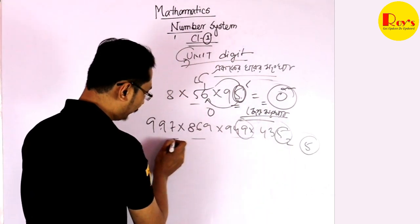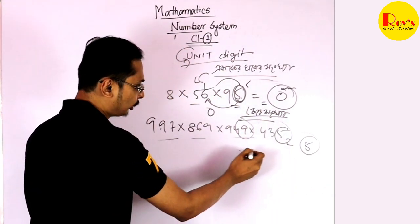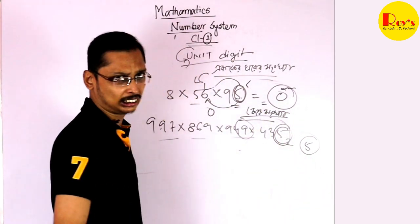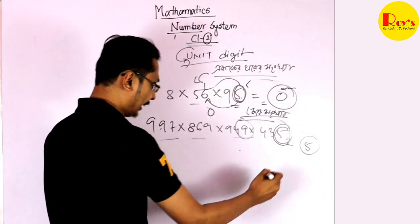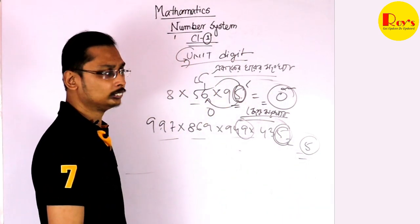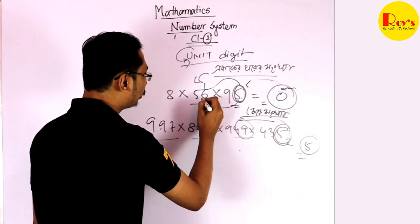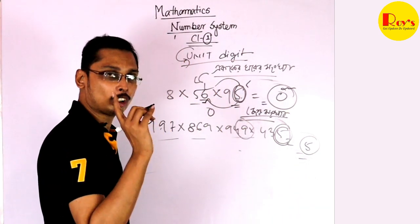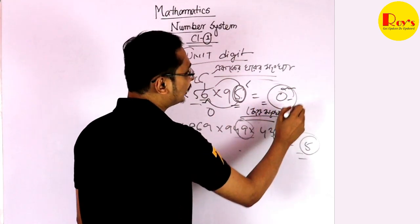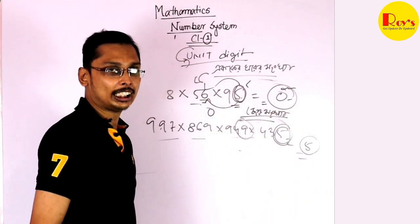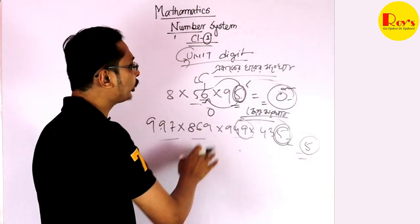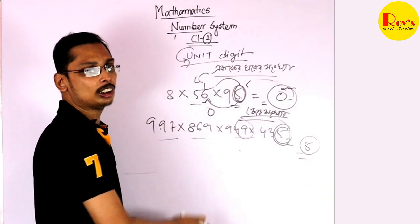If you have zero unit digit, if you have zero, you have zero. Answer is five. And the second thing is, when you have zero, it will be zero. If you learn the concept, you will choose to use digit zero.